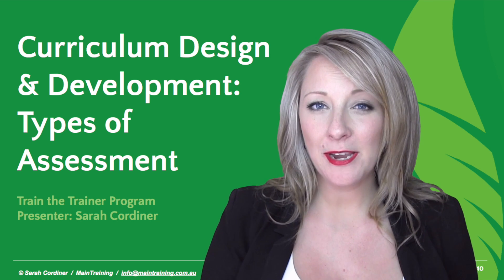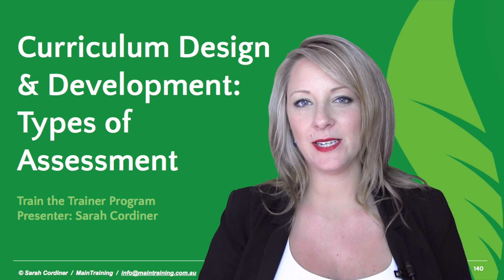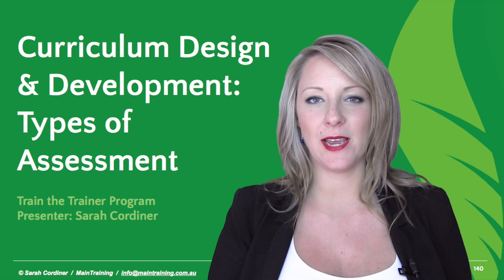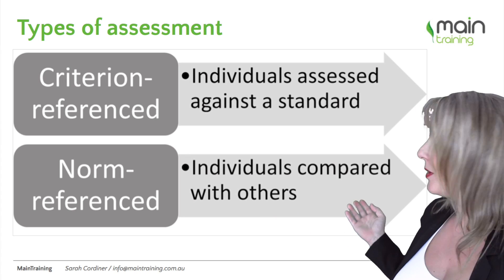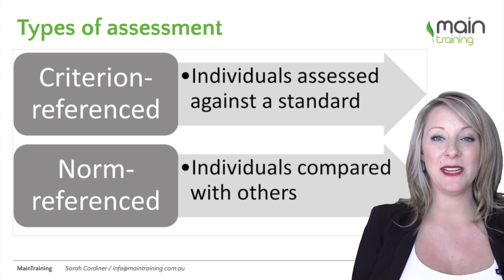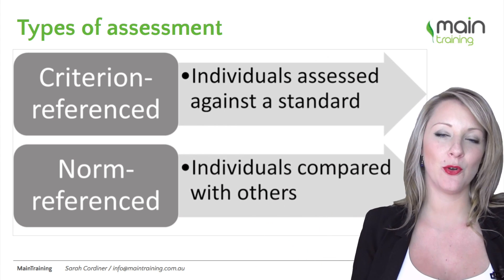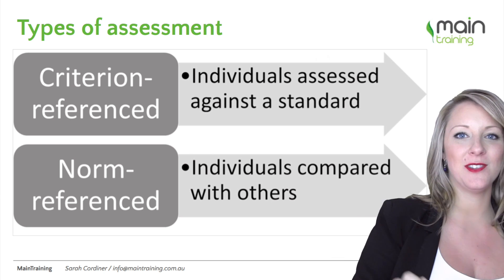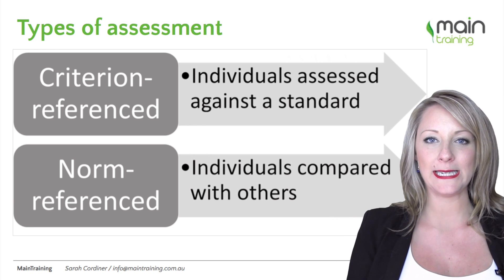There are many different types of assessment, but there are two fundamentally different methods of assessing students against their competency standards. The first one is criterion referenced assessment. This basically means that you have a set of criteria or standards to which you're assessing the student themselves — assessing their skills or knowledge against that set of specified standards or criteria.